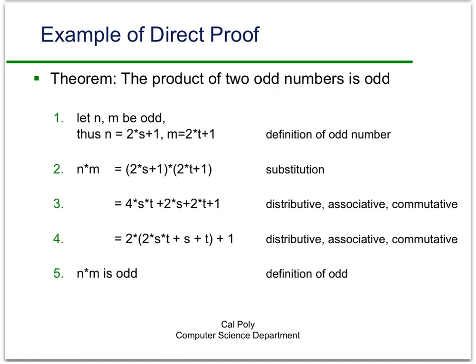As a final example of direct proof, we're going to show that the product of two odd numbers is odd. Now by this point, you should be seeing that there's definitely a pattern here. So just kind of make sure you see the pattern here as I walk through this. So the premise is that we have two odd numbers, and the conclusion is we want to show that the product is odd. So again, we'll start off and we'll let n and m be odd. And by definition of the odd number, that means n is equal to 2s plus 1, and m is equal to 2t plus 1 for some t.